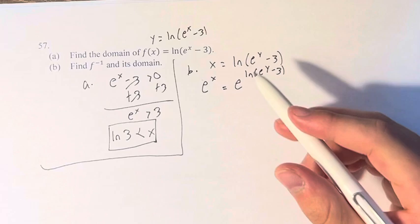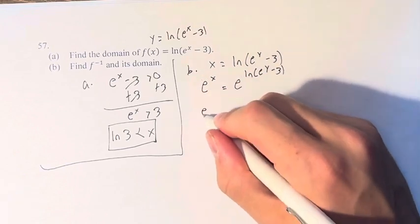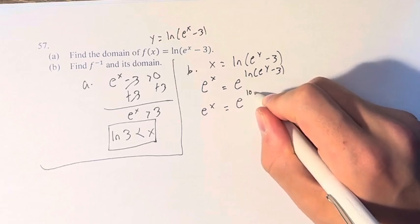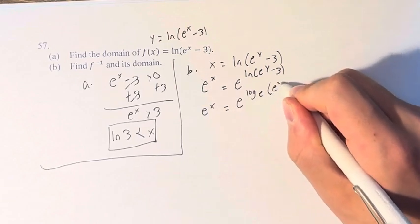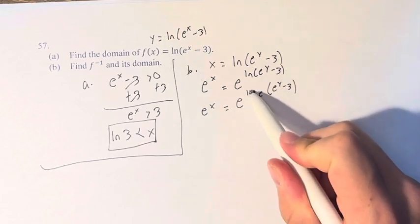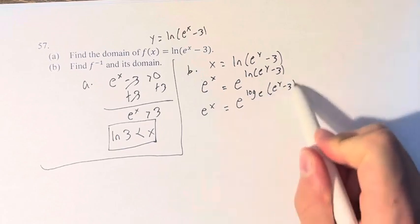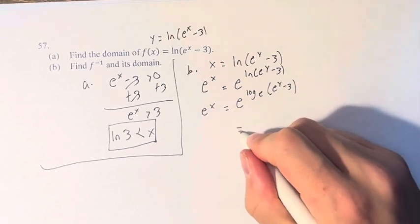And, making sure that's separate, e^x remains the same. This is e to the log base e of everything inside the parentheses. e to the log base e means that this whole thing is just e^y minus 3.